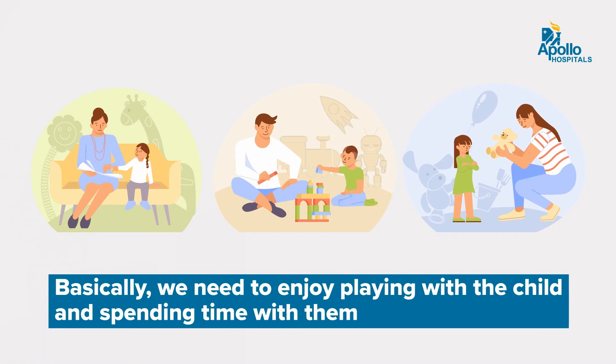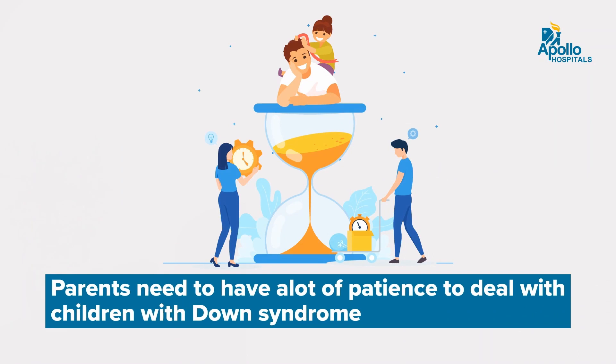Parents need to find out more information available on Down syndrome and how to take care of such children. We also have to love to play with the child and spend more time with them. You have to make short tasks and give them to the child — the child will never understand a complicated task. A short task done repetitively every day helps the child improve over a long time. The most important factor for any caregiver is having patience to deal with that kind of a child.